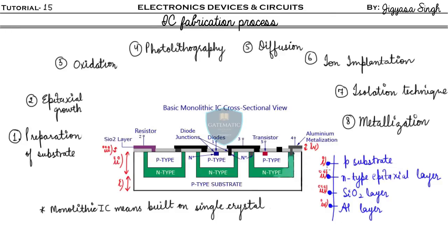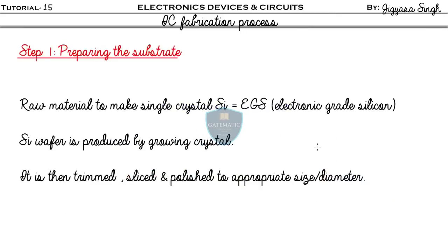In step one, we prepare the substrate — a p-type substrate. The raw material used to make a single crystal silicon (for the monolithic IC) is electronic grade silicon (EGS). The silicon wafer is produced by growing crystal, which is then trimmed, sliced, cleaned, and polished to the appropriate size or diameter.